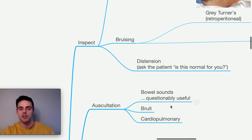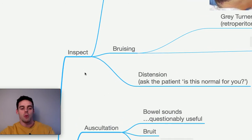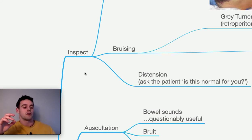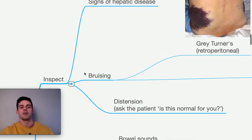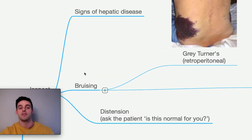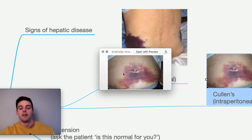On examination, start by looking — and importantly, actually expose the abdomen. A previous consultant noted that examining over clothing led to a missed Cullen's sign. Look for atraumatic bruising. Grey Turner's sign — bruising in one or both flanks — tends to indicate retroperitoneal bleeding, which could be from a ruptured retrocaecal appendix or retroperitoneal structure such as the aorta. Cullen's sign — bruising on the front of the abdomen — tends to represent intraperitoneal bleeding. These are very worrying signs.